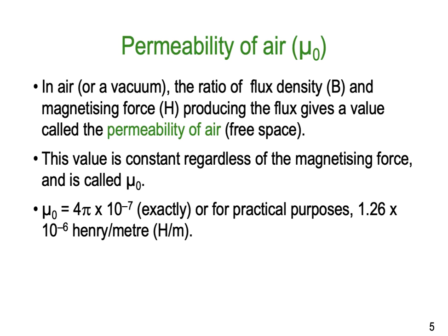We can actually calculate mu zero — it's equal to 4π times 10 to the minus 7. It's a nice little standard constant, one of those numbers that the universe is very finely tuned and balanced around. For all practical purposes we simply call it 1.26 times 10 to the minus 6 Henrys per metre. There is this relationship between inductance and the Henrys of a magnetic field.